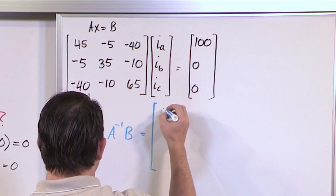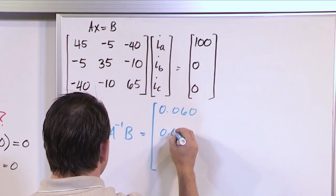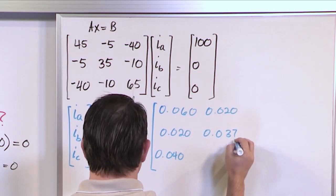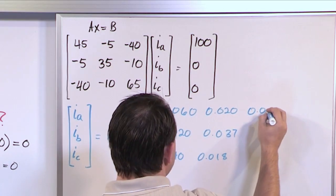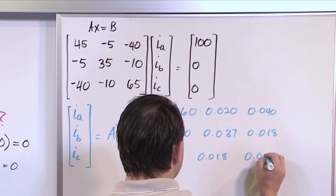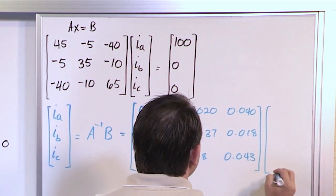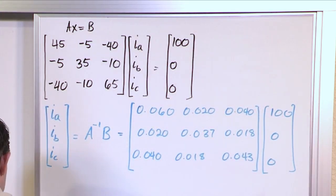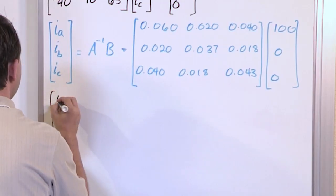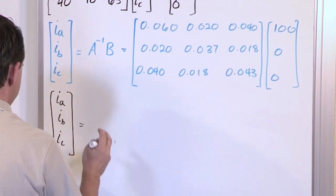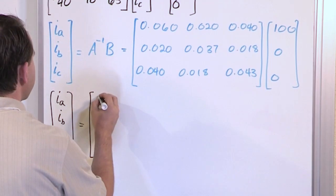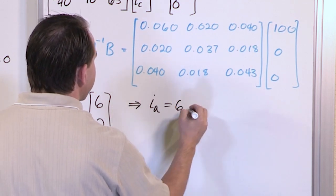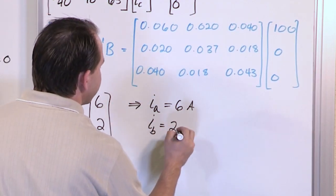Taking the inverse of matrix A and multiplying by the column vector B gives us the answer. The result is a beautiful [6, 2, 4], meaning IA = 6 amps, IB = 2 amps, and IC = 4 amps. The positive value of IA confirms the direction we assumed for mesh A was correct — the current really does flow up through the source, as expected for an active voltage source pushing current out of its positive terminal.